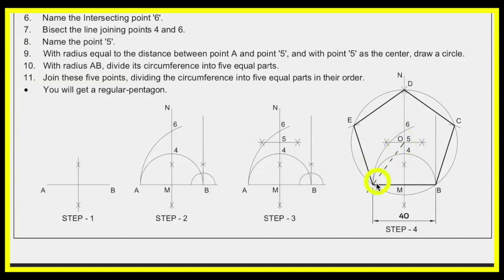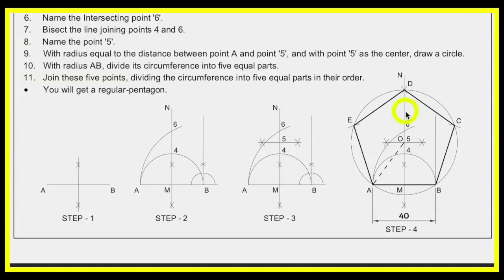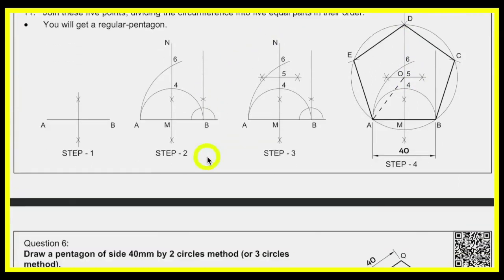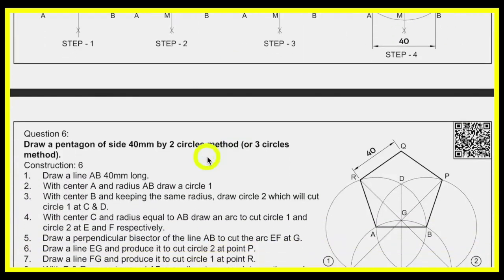You'll get the pentagon. In this method you can also draw hexagon, heptagon, and octagon. Take 5 to 6 and cut up to get the heptagon; 7 to 8 gives the octagon. That way you can draw any number of polygons.